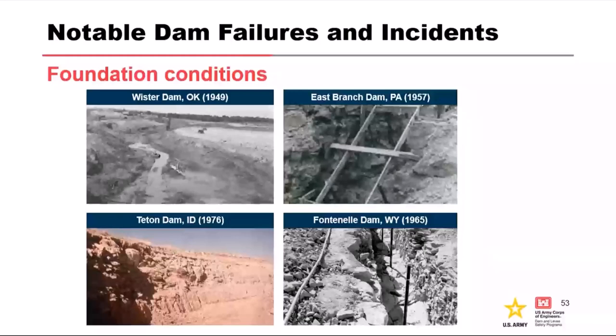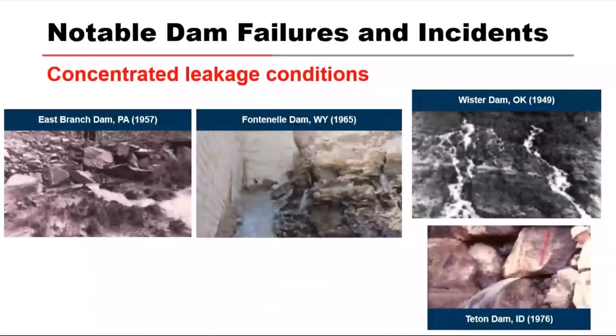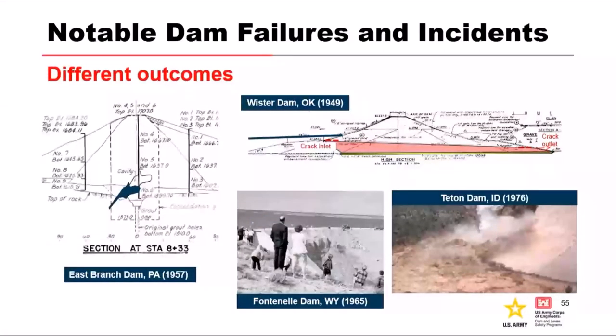Four particular incidents: Worcester Dam, East Branch Dam, Teton Dam, and Fontanelle Dam. Only Teton Dam went to full failure — it's the only one that failed, but they all had CLE issues in the foundation. Concentrated leak in the foundation — when the foundation isn't properly treated or when contacts between structures aren't well compacted or there aren't resilience features built in — you see CLE occurring, exiting the face. Only Teton Dam breached; it was a big deal and actually helped initiate the dam safety program.